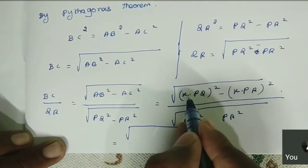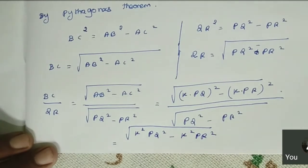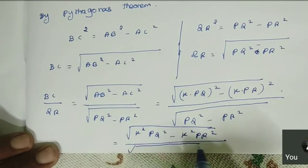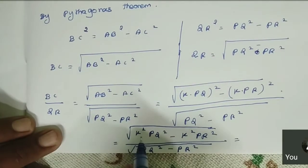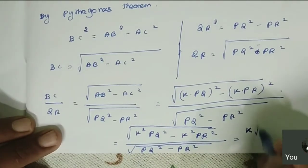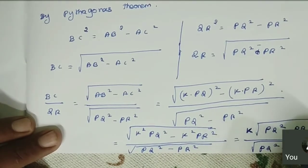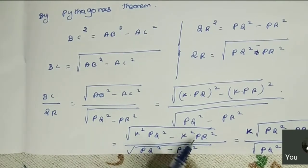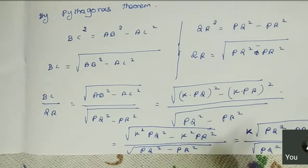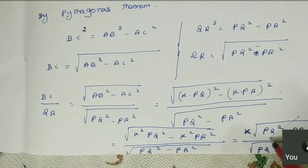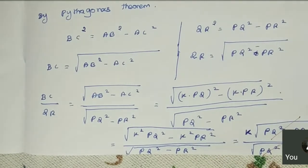Expanding: (K·PQ) squared minus (K·PR) squared equals K squared·PQ squared minus K squared·PR squared. Taking K squared as common and out of the root it becomes K. So BC/QR equals K times root of (PQ squared minus PR squared) divided by root of (PQ squared minus PR squared), and those cancel, leaving BC/QR equals K.